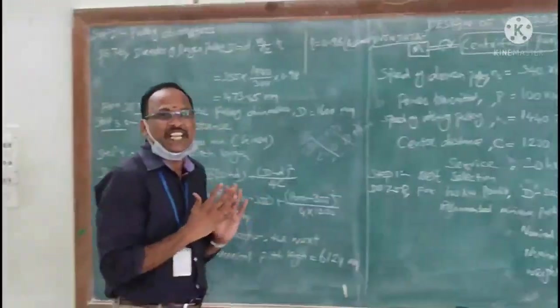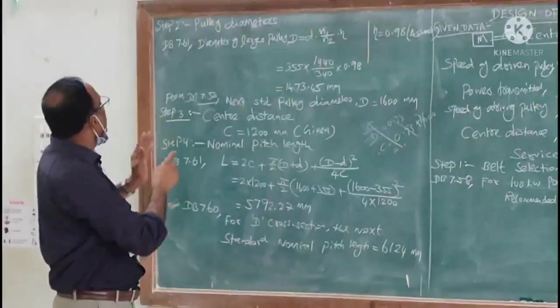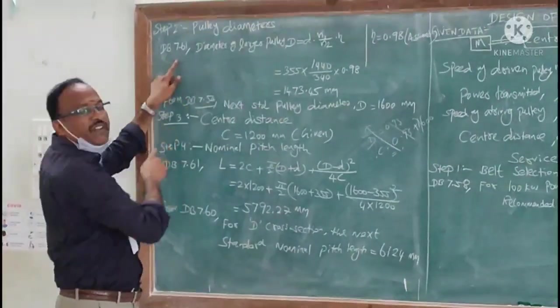Now we move to the second step. This is step number 2: we can calculate the pulley diameters. Refer the page number 7.61.